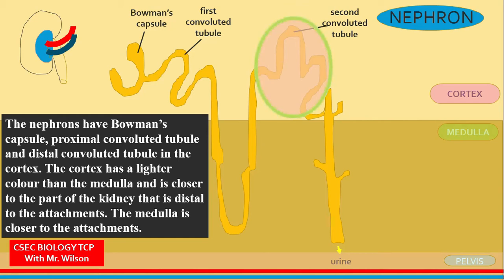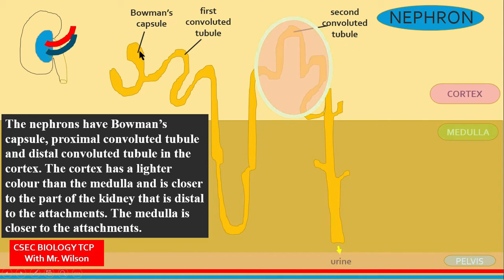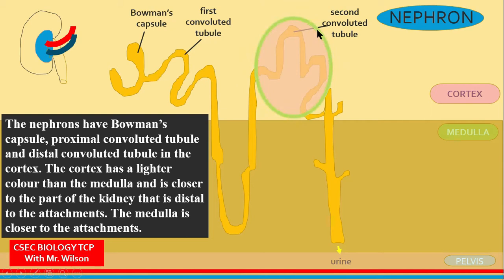Proximal convoluted tubule refers to the tubule being closest to the Bowman's capsule — proximal means within proximity. Distal means some distance away from the Bowman's capsule, which makes it the distal convoluted tubule. They are also called the first and second convoluted tubule respectively.